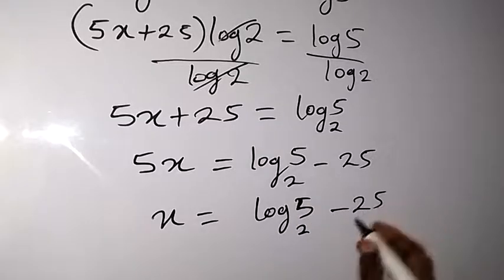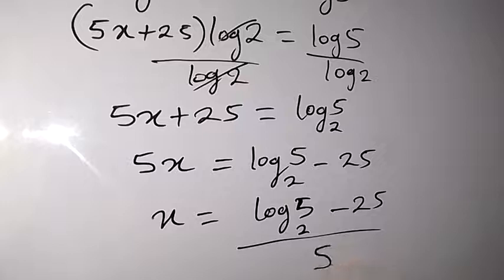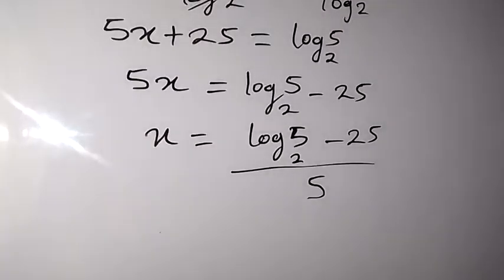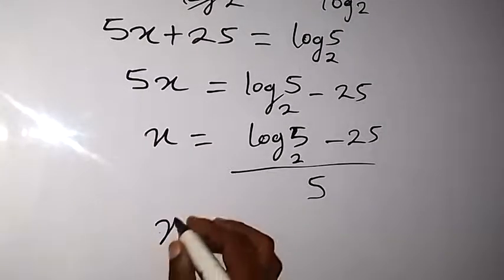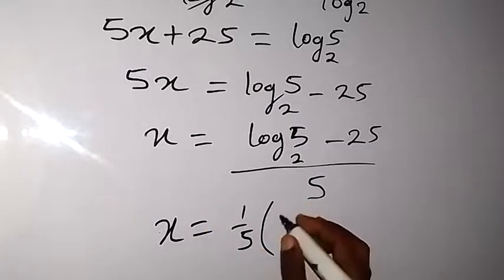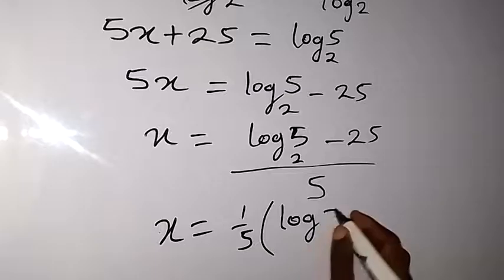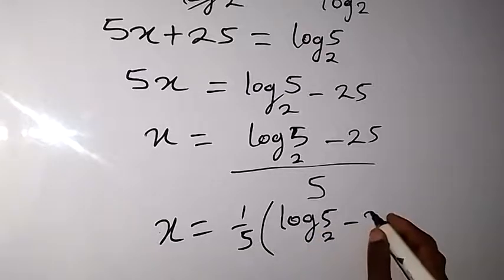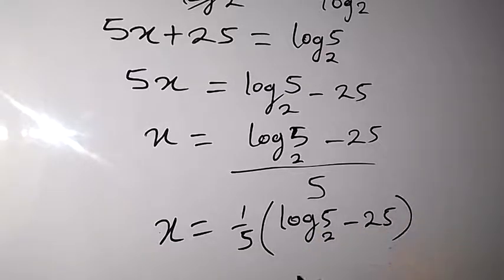Minus 25, then all over 5. And also we can rewrite the answer and say this can be written as x equals to 1 over 5 multiply by log 5 base 2, then minus 25. And this is the solution to the problem.